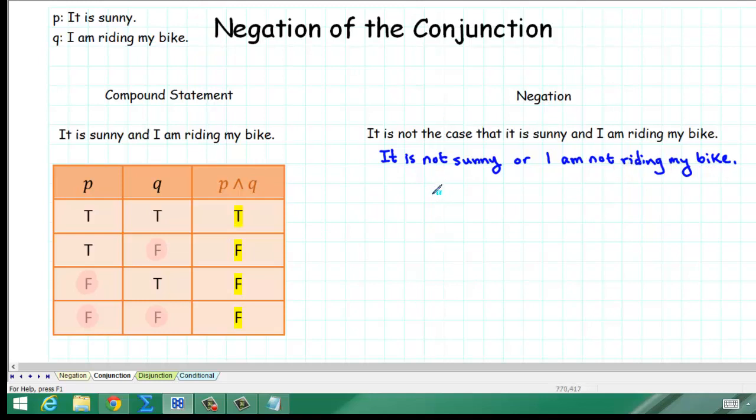For the statement on the top, we could say, it is not the case that it is sunny, which is P, and I am riding my bike, which is Q. So, the negation of P and Q. What we're claiming is that this is equivalent to, it is not sunny, which would be not P, or I am not riding my bike, which would be not Q.